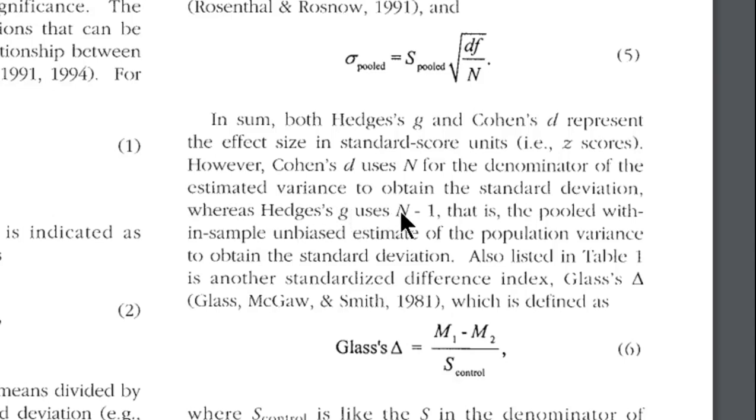whereas Hedges' g uses n minus 1, which is the sample-based standard deviation. And as I mentioned, virtually everyone has access only to the sample standard deviation.